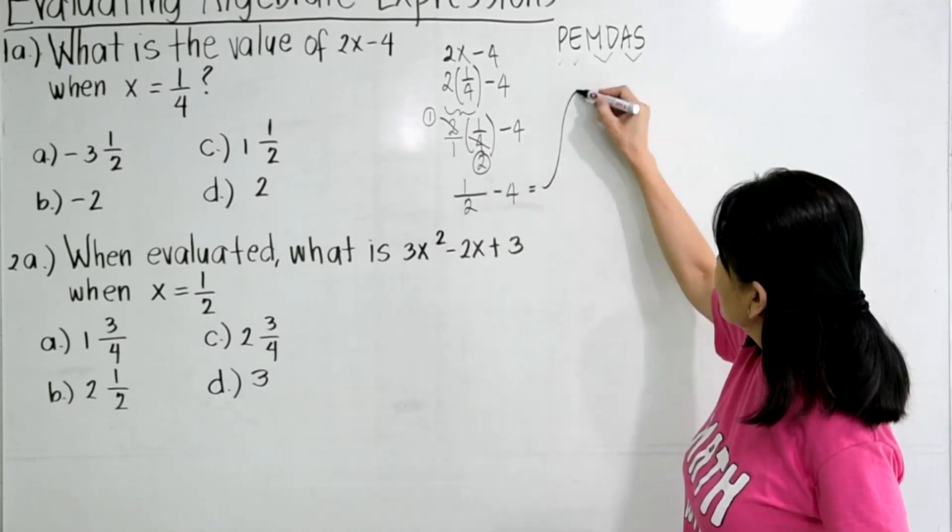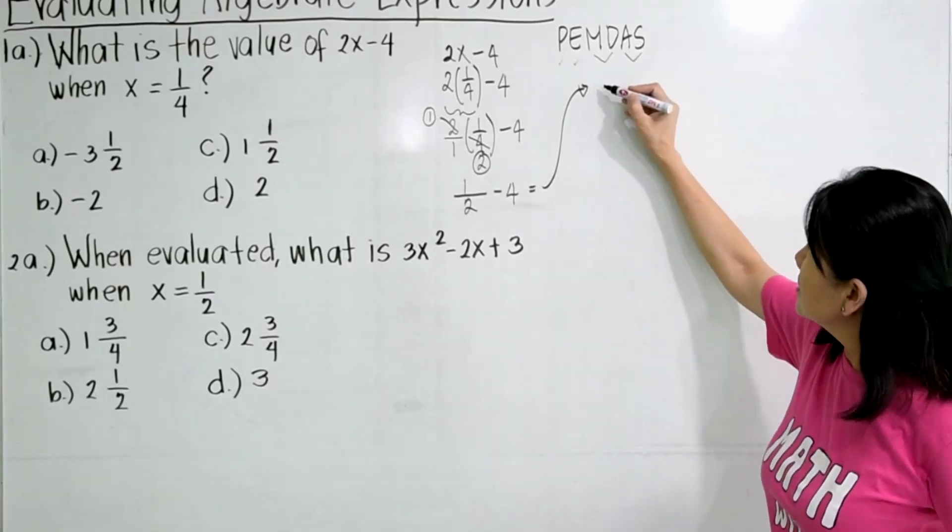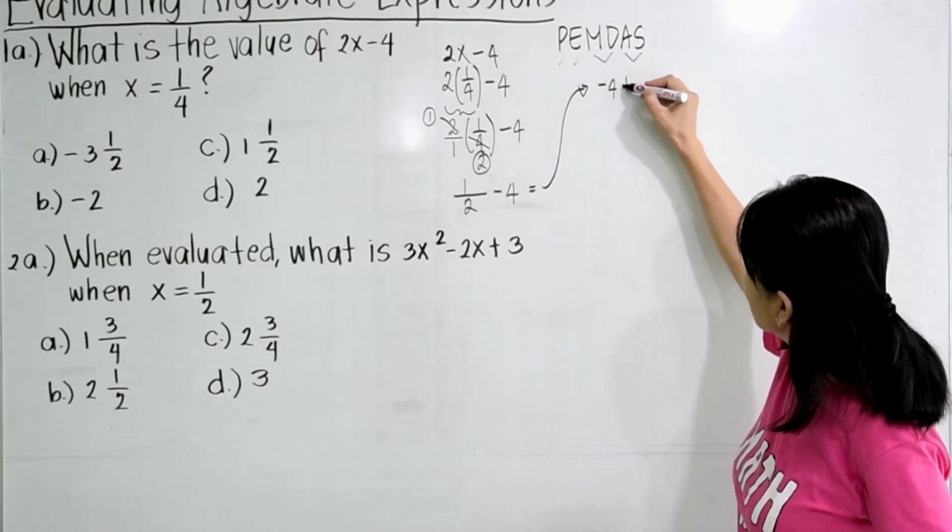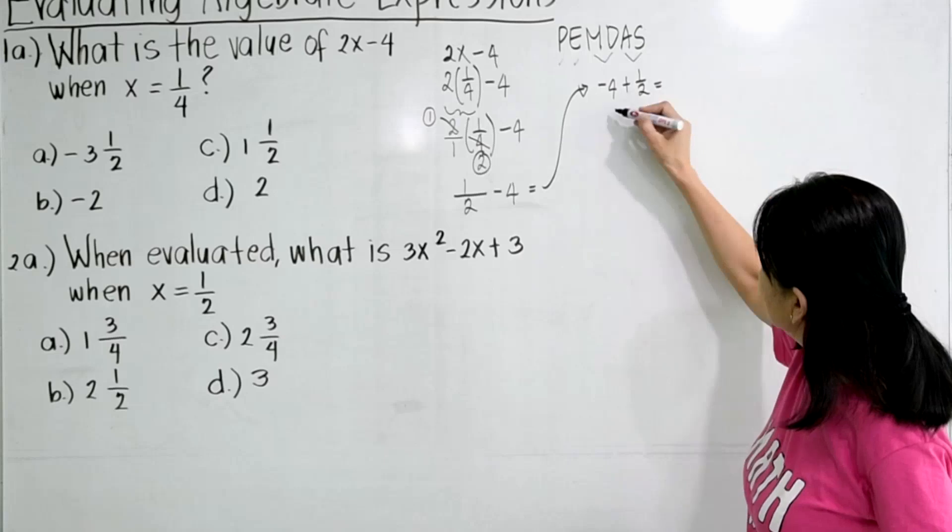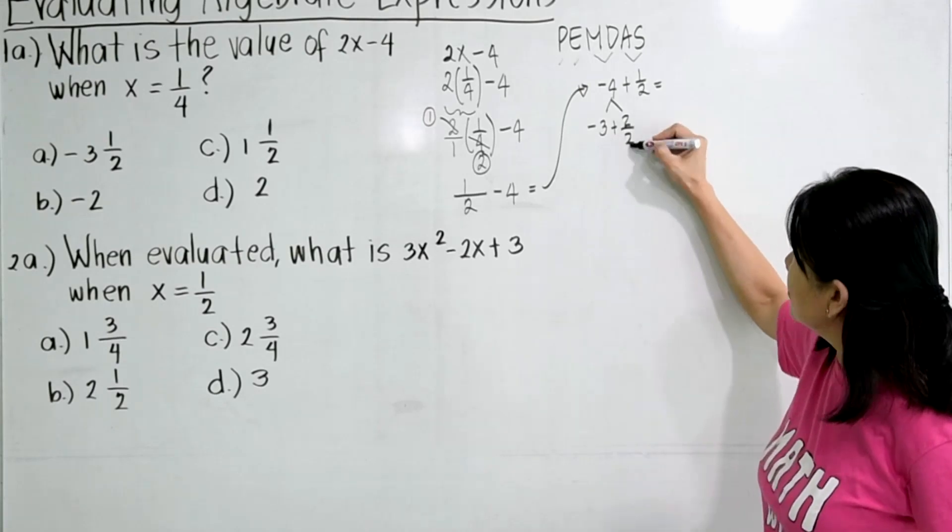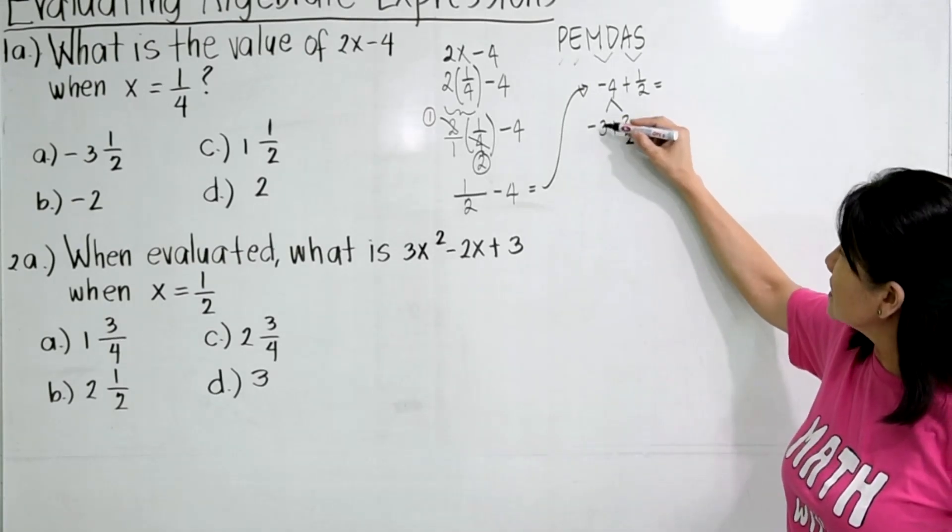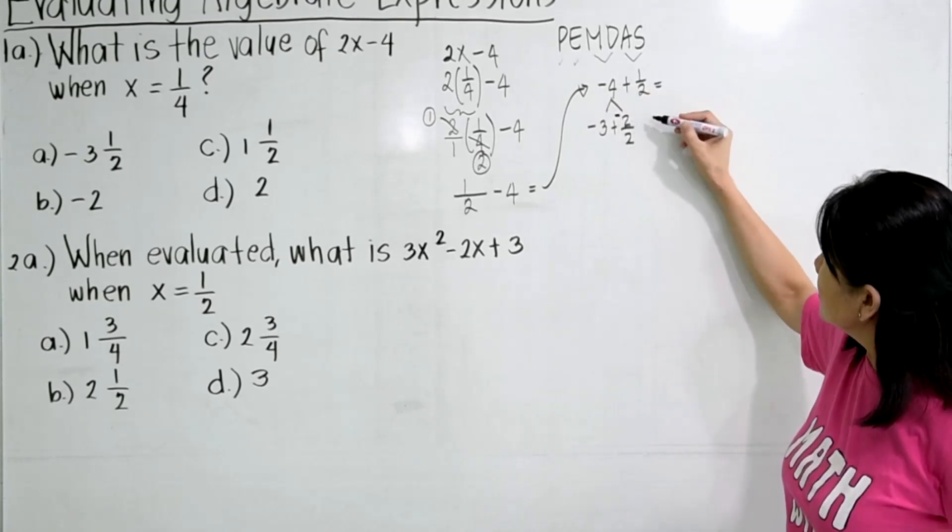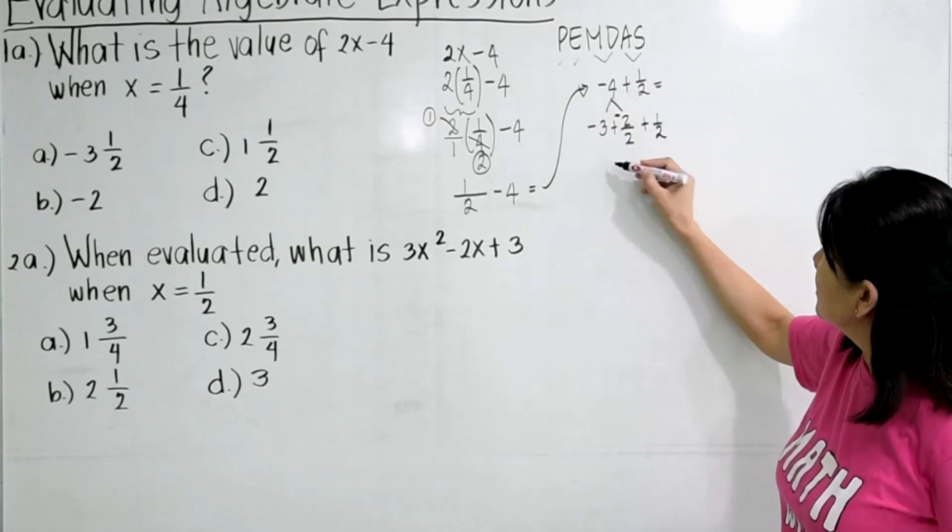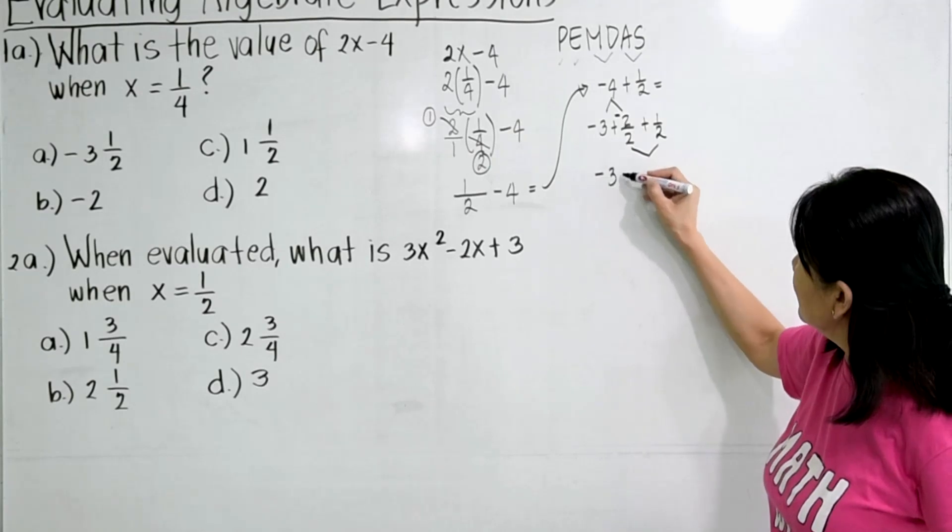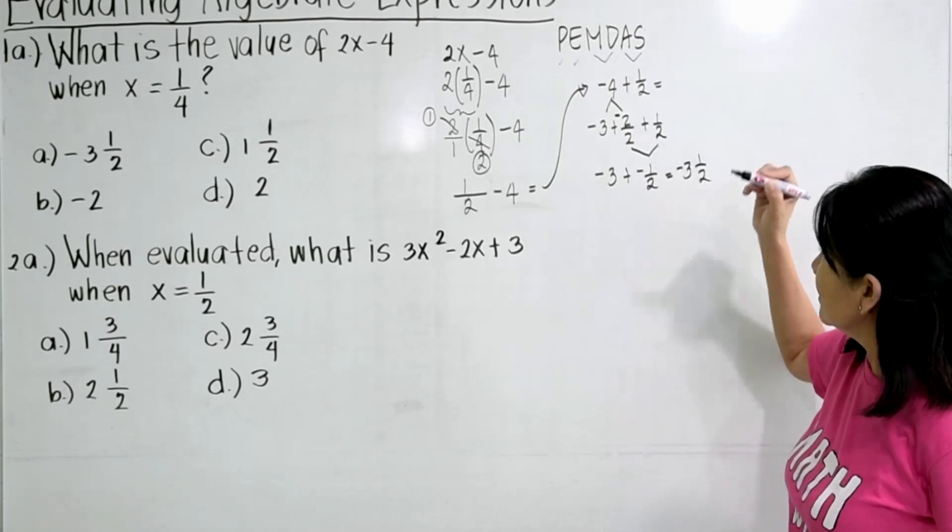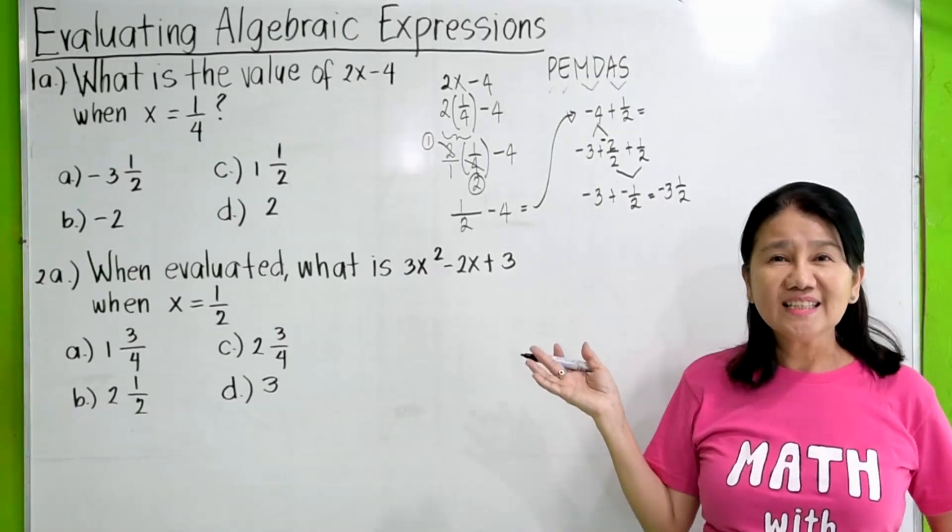So this is now 1 times 1 is 1 over 1 times 2 is 2, which is 1/2 minus 4. Now, here you can get this in two different ways. So this is negative 4, so this is the same as negative 4 plus 1/2. So it will give you negative 3 plus 2/2. Remember, 2/2 is just 1. We better do this, negative 2 over 2, which is negative 1 plus negative 3 is negative 4, plus 1/2. So this will give you negative 3 plus negative 1/2 or negative 3 1/2. So the answer is letter A.